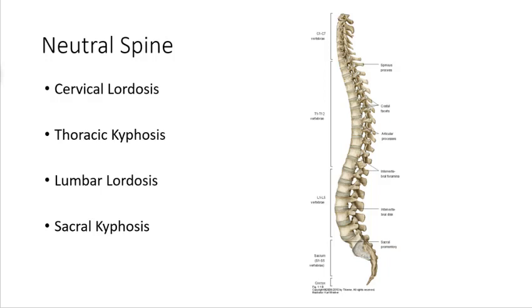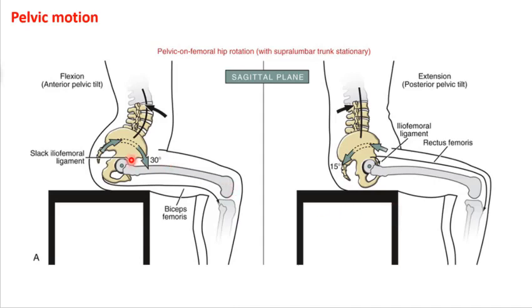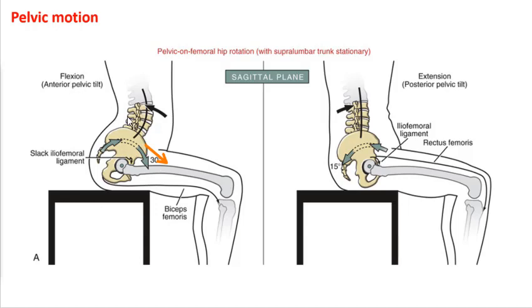Our next few slides look at how pelvic movements affect the spine. If we do an anterior pelvic tilt, it's going to accompany lumbar extension — you're going to arch your back. At the same time, it's going to bring the ASIS closer to the femur, thus creating hip flexion. So an anterior pelvic tilt is coupled with lumbar extension. When we look at the posterior pelvic tilt, where the pelvis is rotating backwards, that's going to create lumbar flexion — you're going to round out the back — and since the anterior part of the pelvis is moving away, that's the same as creating hip extension.